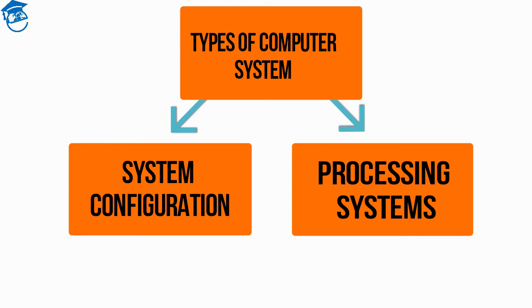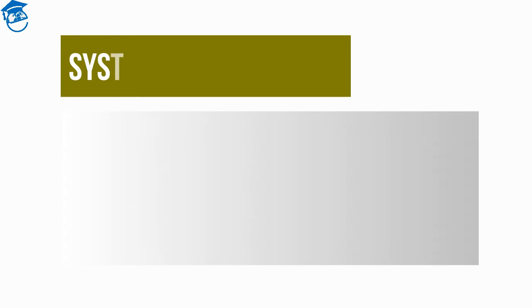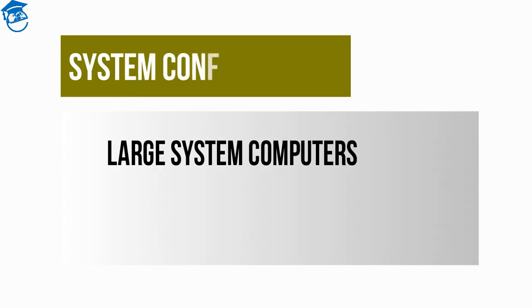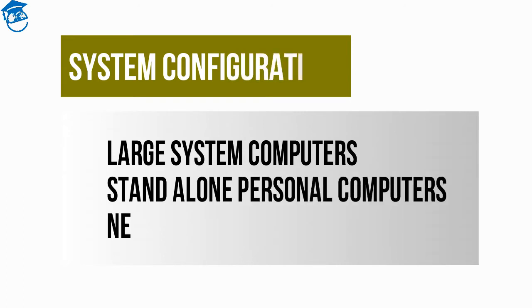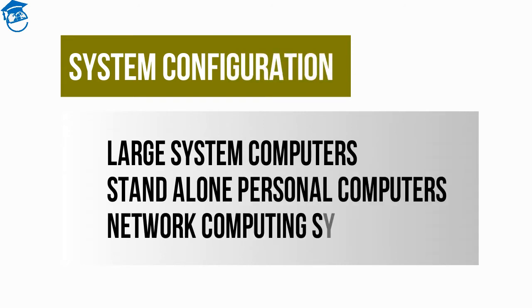Let's move with the first one: systems configuration. This is basically classified into three different categories. Number one is large system computers. These are basically the kind of computers that are placed in high multinational companies wherein they need to support a large number of global clients. So these are going to cover all those huge conglomerates — large system computers.